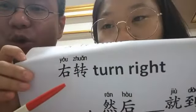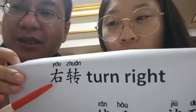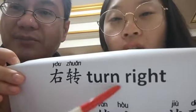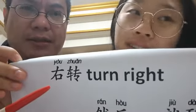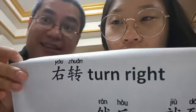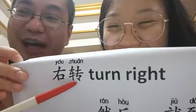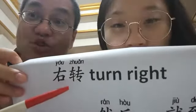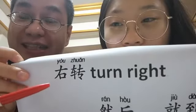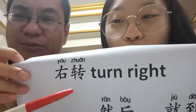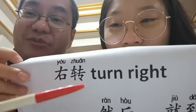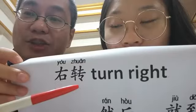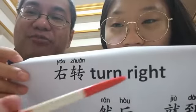And what's the next one? 右转. 右转 means turn right. Abby, 右 means right — the direction right. And 转 means turn. So in Chinese we say 右转, it's like right-turn — we say right first. 右转, which means turn right.